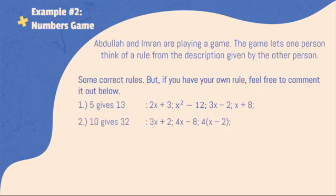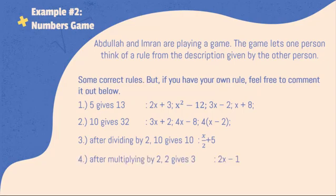Number 2: 10 gives 32. Some rules are 3X plus 2, or 4X minus 8, and 4 times X minus 2. Number 3: After dividing by 2, 10 gives 10. We have X over 2 plus 5 as a possible rule. Number 4: After multiplying by 2, 2 gives 3. A possible rule for this is 2X minus 1.